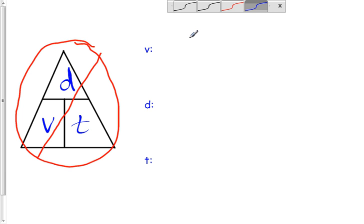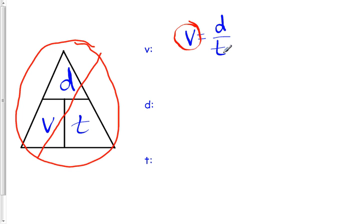Okay, so we're going to start with our basic equation, which is speed equals distance over time. Okay, so when we're solving for speed, we're going to solve for our v, so we don't have to do anything. It's just distance over time. Alright, so that one's easy.